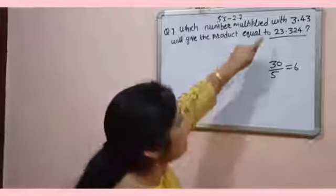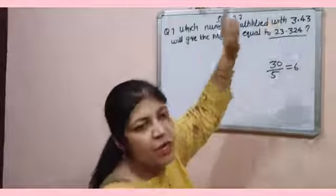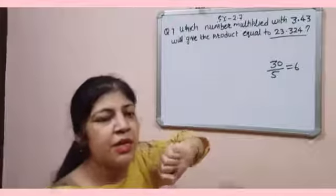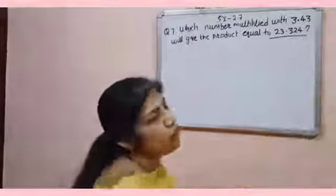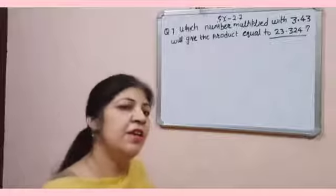So same here, you will divide product by first decimal number then the second decimal number will come. So even you can do this by forming linear equation.